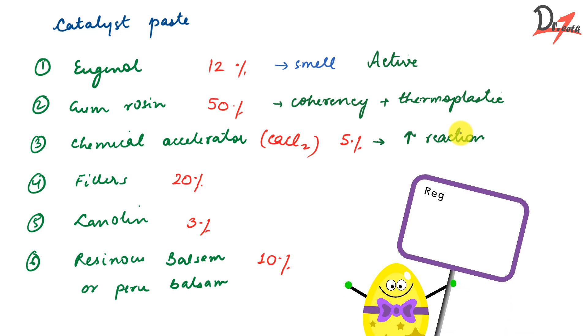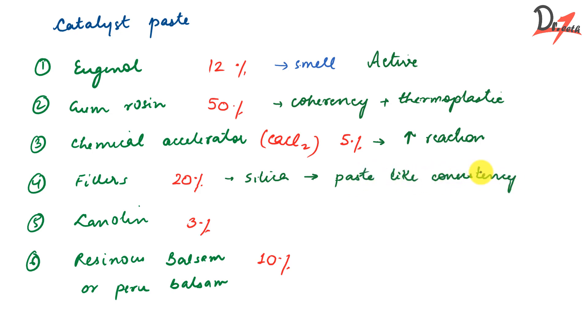Then we have fillers in which we add silica. Silica is added and it gives the catalyst a paste-like consistency. And since it is a filler, it also increases the strength. Coming to lanolin, it acts as a plasticizer. Then resinous balsam or peru balsam, it increases the flow and it also acts as a plasticizer. So now we know the composition of the zinc oxide eugenol.